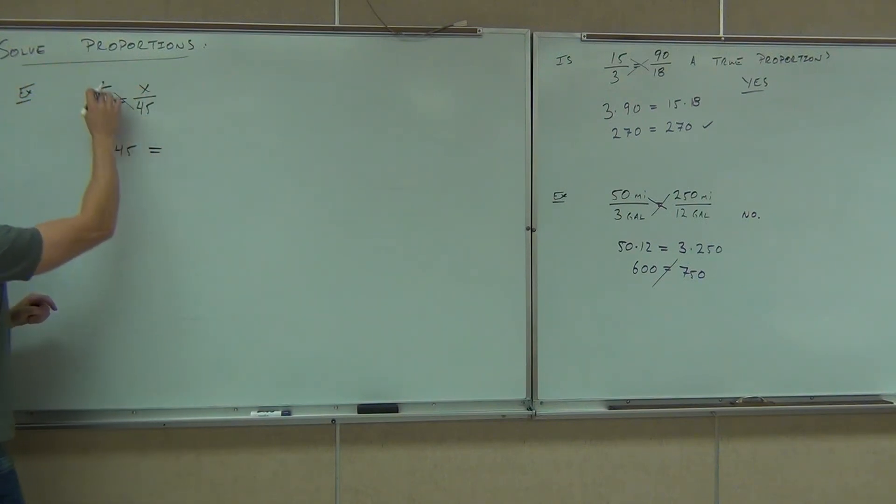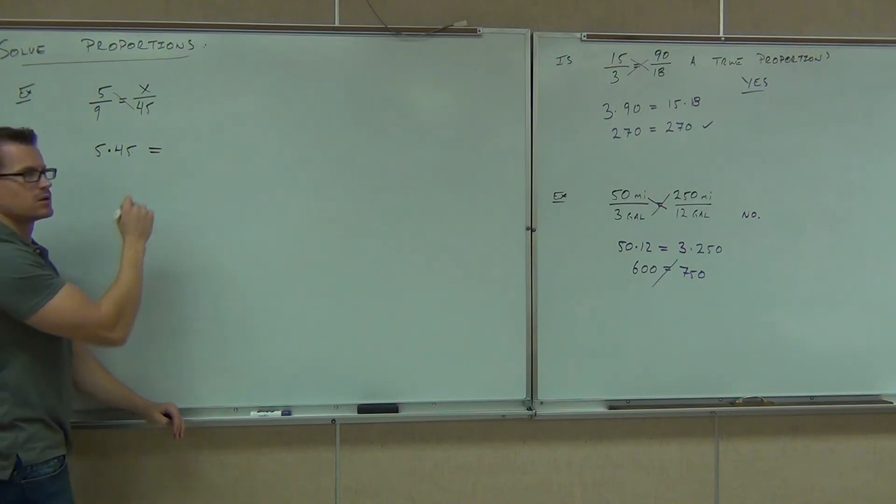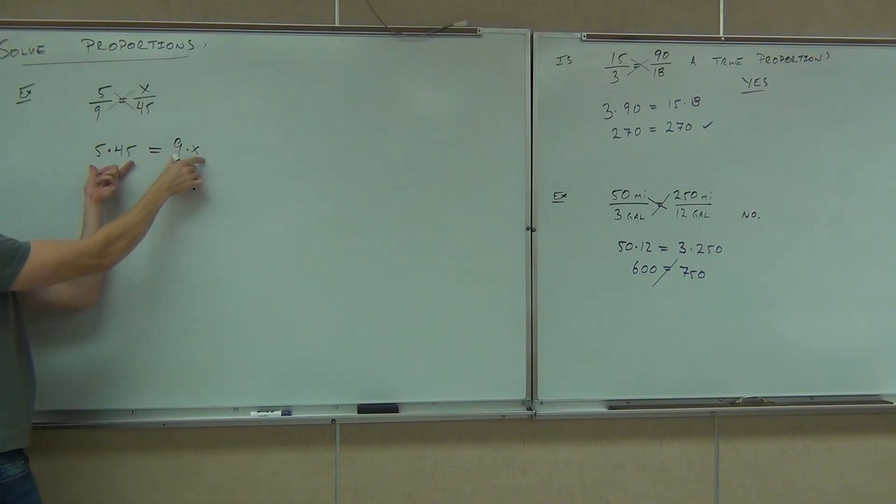you could have five times 45 equals, what's the other one? Nine times x. Nine times x. Okay, great. Nine times x. You could have it here or look at the board. You could have it reversed. Either way, it doesn't matter. It doesn't matter at all.